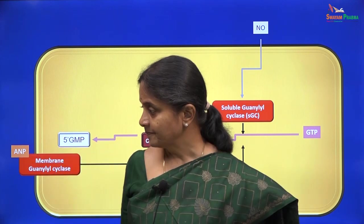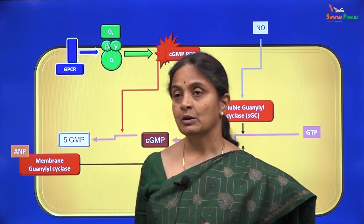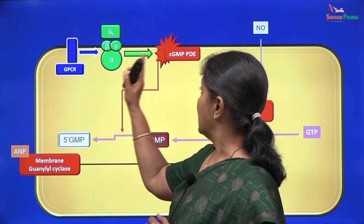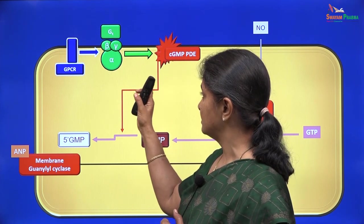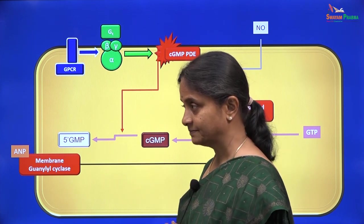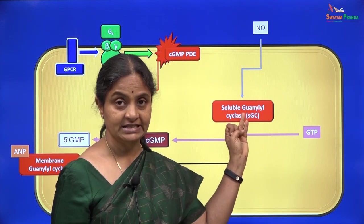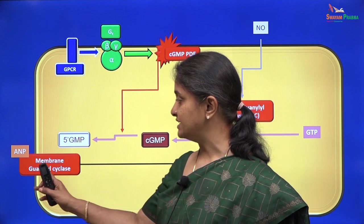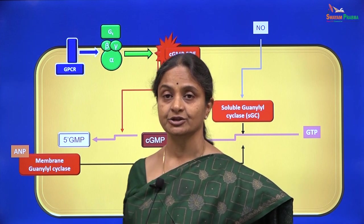To summarize, we have seen three ways in which cGMP levels can be modulated within the cell. One is by a G protein coupled mechanism where activation of cGMP phosphodiesterase in the membrane through a G protein can reduce cGMP levels. cGMP levels can increase by the action of soluble guanylyl cyclase, which is activated by nitric oxide. cGMP levels can also increase by the activity of a membrane guanylyl cyclase, which is activated by atrial natriuretic peptide.